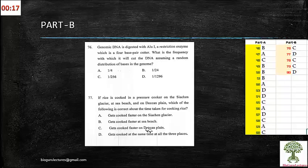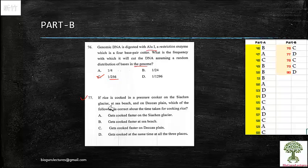Now we are going to part B. Genomic DNA digested with ALU-1 restriction enzyme which is a 4 base pair cutter. What is the frequency with which it will cut the DNA, assuming a random distribution of bases in the genome? The creators actually say 1 by 256 is the actual proportion it will cut. I don't have any more logical information for that. I think you should be supposed to study a lot about that, particularly ALU-1.